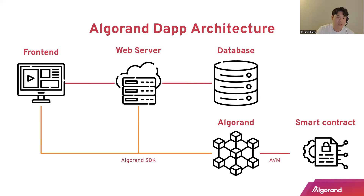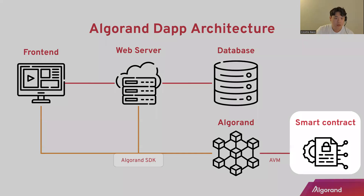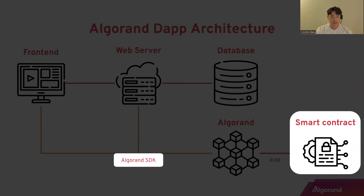You interact with the smart contract using the Algorand SDK, either directly from the front end or through the web server. Today, when I talk about Beaker, it's going to have something to do with these two things: the Algorand SDK and a smart contract written with PyTeal.